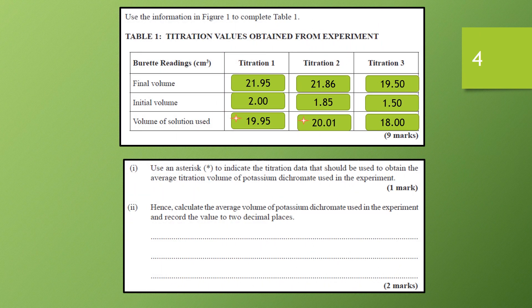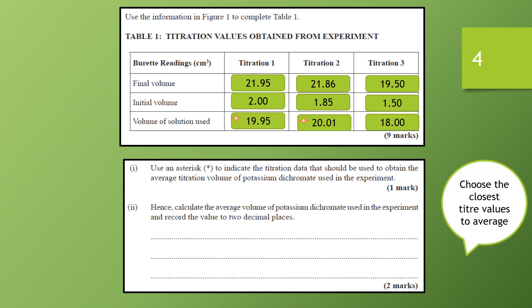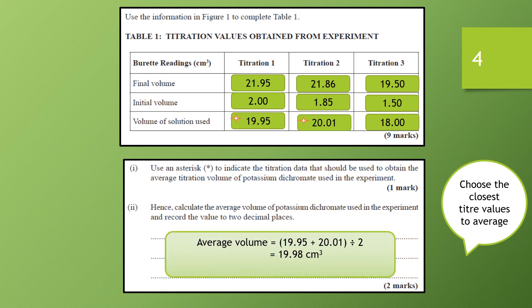We use all our volume measurements — carried over — and put an asterisk to indicate which values we'll use to obtain the average. When doing titrations we use the values that are closest — the concordant titre values. We have 19.95 mL in the first titration, 20.01 in the second, and 18.00 in the third — a difference of almost 2 mL. So we take the two closest readings, and our average volume works out to be 19.98 cm³.